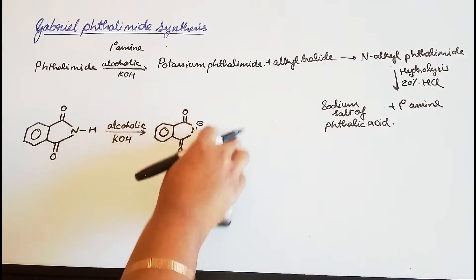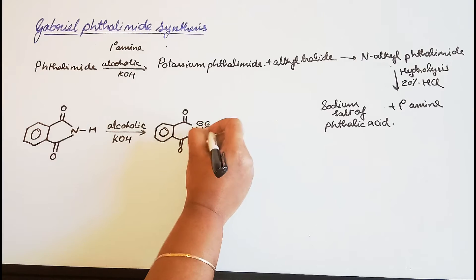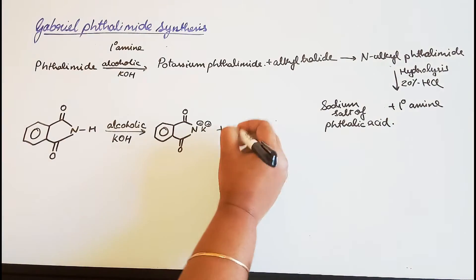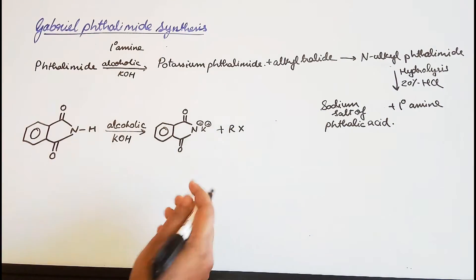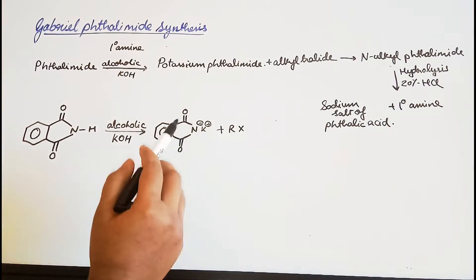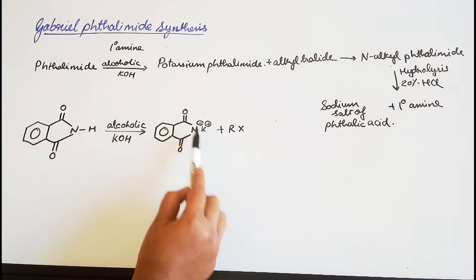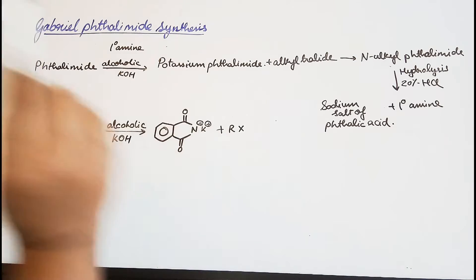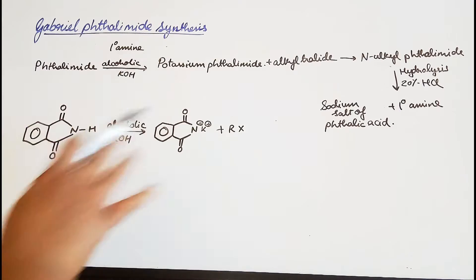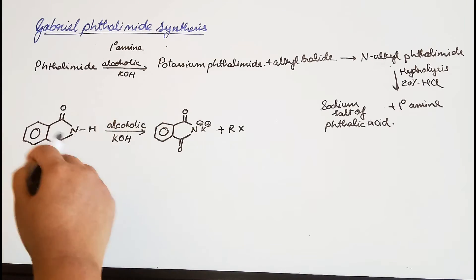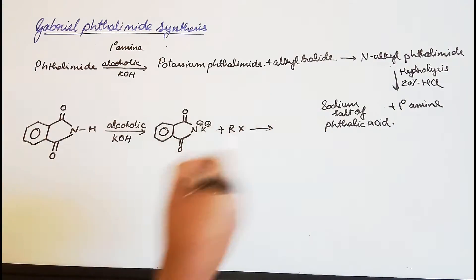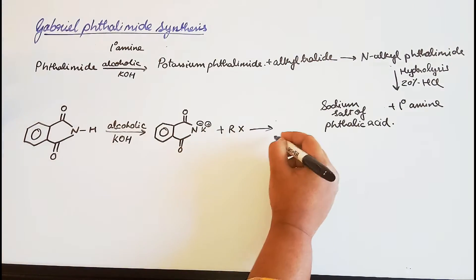Next, potassium phthalimide undergoes reaction with an alkyl halide RX. The potassium is kicked out and the R group comes attached to the nitrogen. This is essentially replacing the hydrogen with the R group, giving us N-alkyl phthalimide.